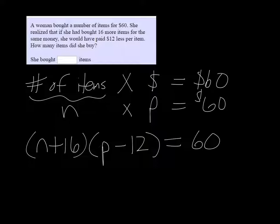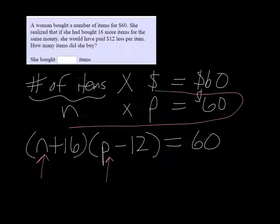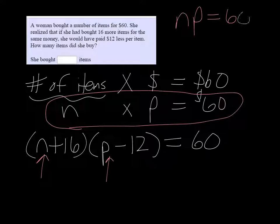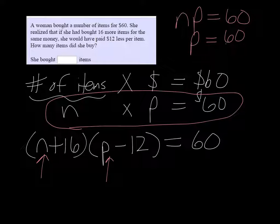So that gives us an equation, but we have two variables in here. We have an N and we have a P. So we need to find a way to eliminate one of those. If we go back to this equation, which is just saying the number of items you buy times the price gives you your final cost, so we have NP equals 60. I can actually solve this for P and get P equals 60 over N.